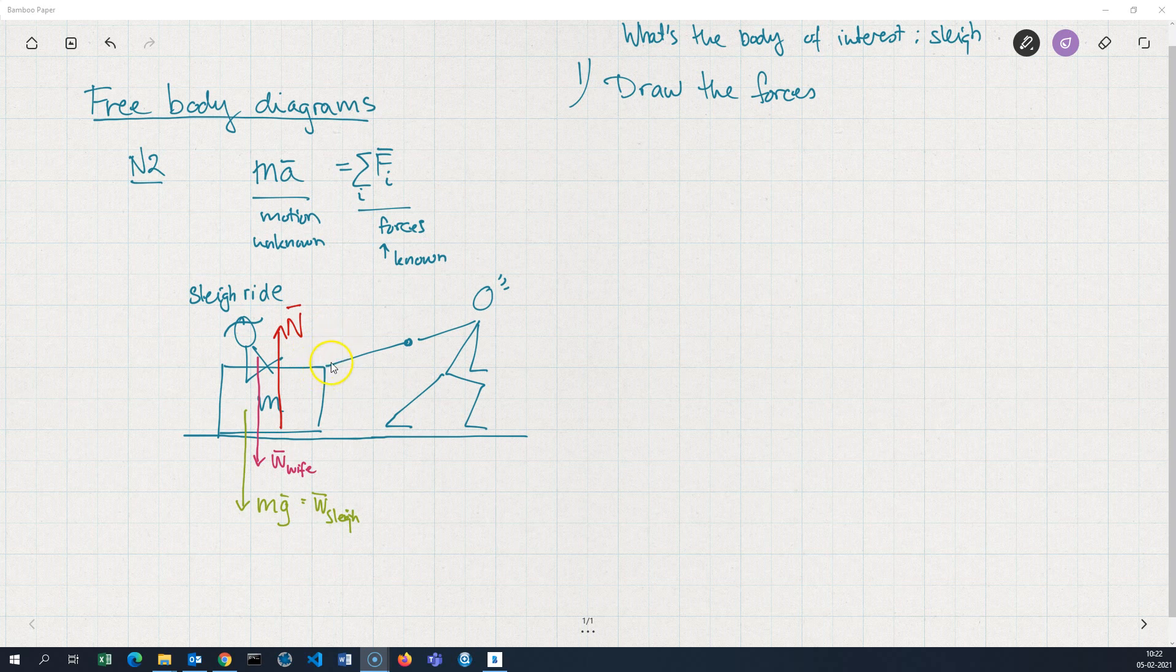Then there's the force that I act upon the sleigh with. I'll just call it f. I'm pulling the sleigh along in the direction of this string here.